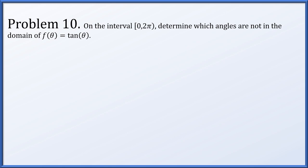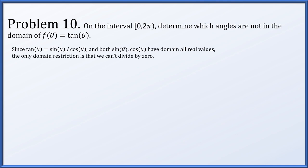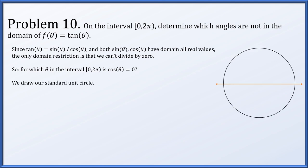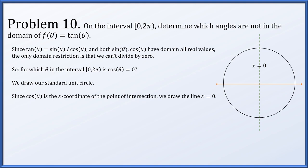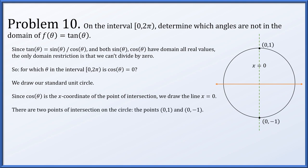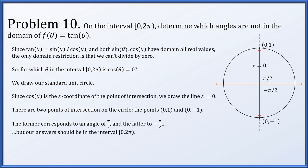Problem 10: on the interval from 0 to 2π, find which angles are not in the domain of tan(θ). Since tan(θ) = sin(θ)/cos(θ), and sine and cosine have domain all real values, the only restriction is that we can't divide by zero. So we need to find which θ from 0 to 2π makes cos(θ) equal to zero. Drawing the unit circle, cos(θ) is the x-coordinate, so we draw the line x = 0. The two points of intersection are (0,1) and (0,-1), corresponding to angles π/2 and -π/2 respectively. Since our answers must be in the interval from 0 to 2π, we replace -π/2 with the coterminal angle 3π/2. So the angles not in the domain of tangent are π/2 and 3π/2.